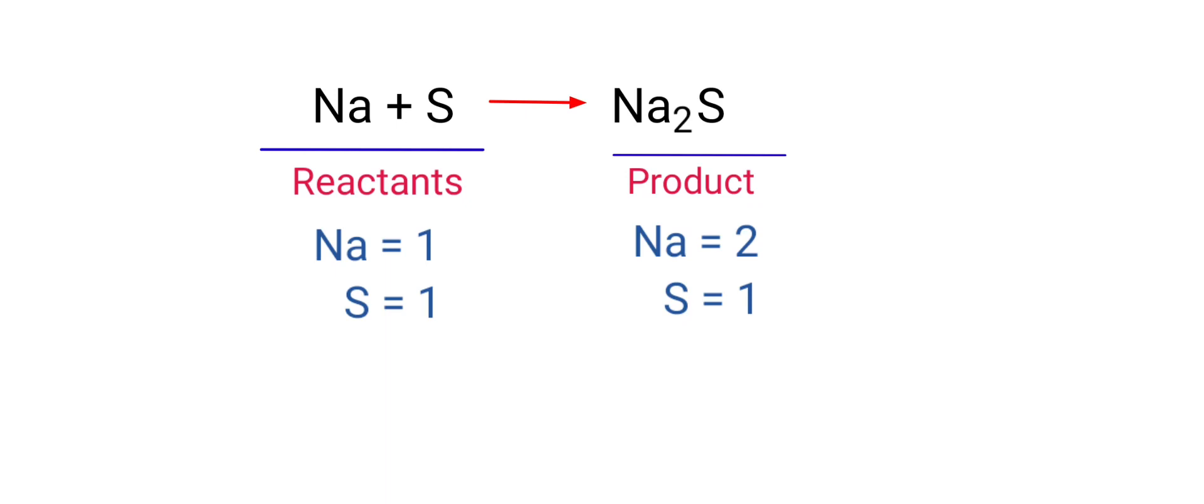To balance the chemical equation, we need to make use of coefficients. A coefficient is a number that we place in front of a chemical formula. In this equation, we need to balance the sodium atoms. To do this, we need to put a coefficient of 2 in front of Na.